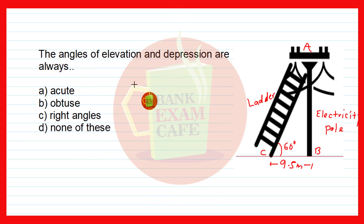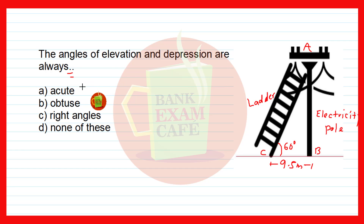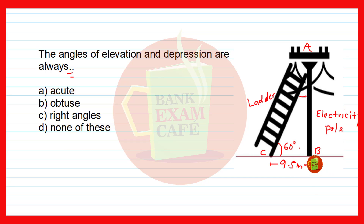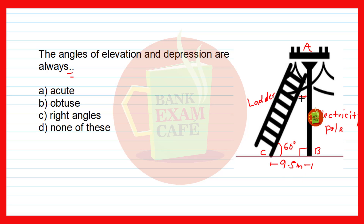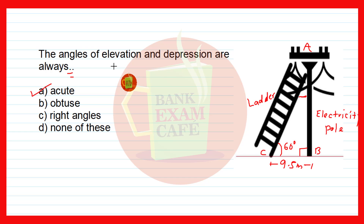The next question asks: the angles of elevation and depression are always — acute, obtuse, right angles, or none of these? The angle of depression is when someone looks from the top, and angle of elevation is when looking up. Since these are formed in a right angle triangle, the right angle is always 90 degrees, so the angles of elevation and depression must each be less than 90 degrees — they are always acute angles. Therefore option A, acute angle, is correct.